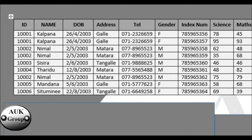You can use fields in this table. If you want to use the address table, you can use the address table. The fields include: ID, name, DOB (date of birth), address, telephone number, and gender. You can see the address on screen.